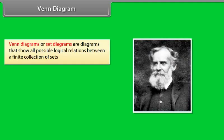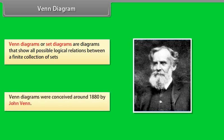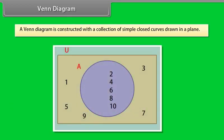Venn Diagram. Venn Diagrams or set diagrams are diagrams that show all possible logical relations between a finite collection of sets. Venn Diagrams were conceived around 1880 by John Venn. A Venn Diagram is constructed with a collection of simple closed curves drawn in a plane.